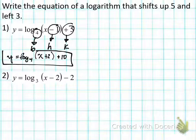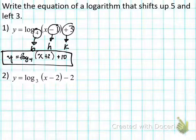Again, what did I do? I identified the parts of the equation and looked at the directions. It says shift up five and left three. To shift the graph up, I increase K — it says shift up five, so five plus five is ten. Then I need to shift it left three: to shift the graph left, increase H. H was originally negative one, so negative one plus three is positive two. Then I brought the rest of the problem down.